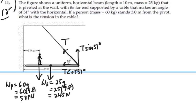We also have a reaction force at the pivot, and we don't know what that reaction force is, but let's give it a vertical and a horizontal component. The horizontal component goes to the right because T cosine 51 degrees is going to the left, and those are going to offset each other since we have no net force in the x direction. So there are three unknowns: V, H, and T.